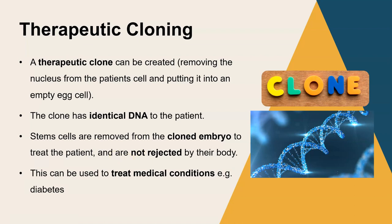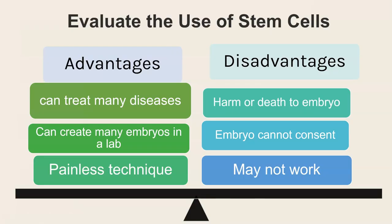This could be used to treat medical conditions like diabetes. There are pros and cons of using embryonic stem cells. Advantages: you can use them to treat many diseases, you can grow lots of embryos in a lab, and this is a completely painless technique for the embryo. Disadvantages: although it doesn't hurt the embryo, it will cause permanent harm or death of that embryo; the embryo can't give consent; and it might not even work. Stem cells replicate rapidly, so sometimes when put into the patient they can replicate so much that they form a tumor. Embryonic stem cell therapy is not a perfect science and you need to be aware of the pros and cons.